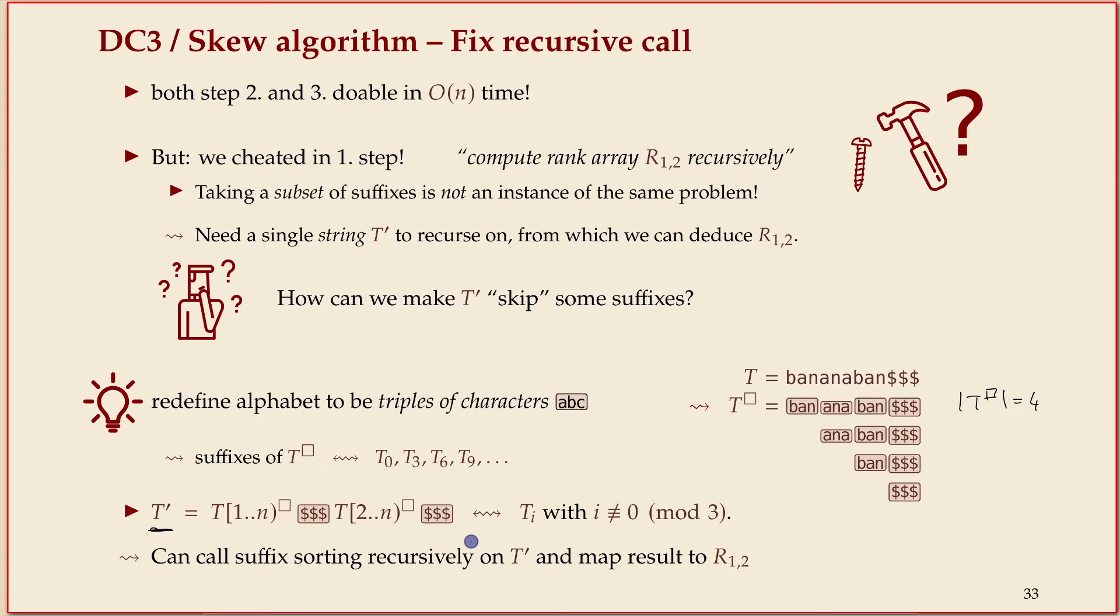The result of that - I'll show you an example on the next slide - is that all the suffixes of this T prime are the suffixes of T that start not at a multiple of three. It's a little bit of a sneaky trick, but by modifying the alphabet you can indeed give the algorithm a different string on a different alphabet that looks quite different from the string you started with, but it solves the problem that you need to be solved, and then it's a proper recursion.